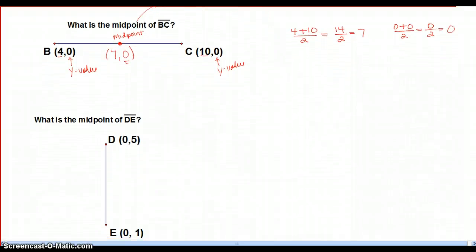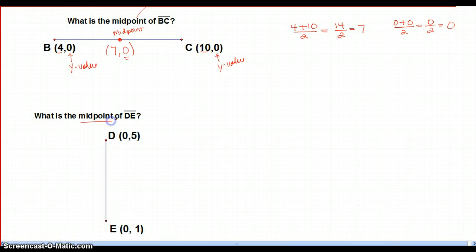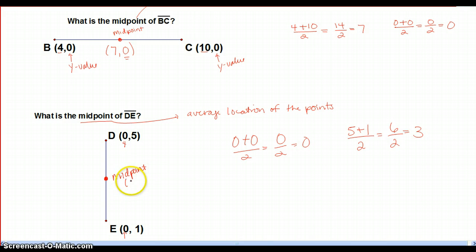Our third example is a vertical line. It asks us again to find the midpoint. I'm going to write it again. That is the average location of the points. So, you should notice that this is 0 and 0. So, the average of 0 plus 0 is still 0. The average of 5 and 1 is 6 divided by 2 is 3. So, my midpoint would be 0 comma 3. It's the average location of the points.